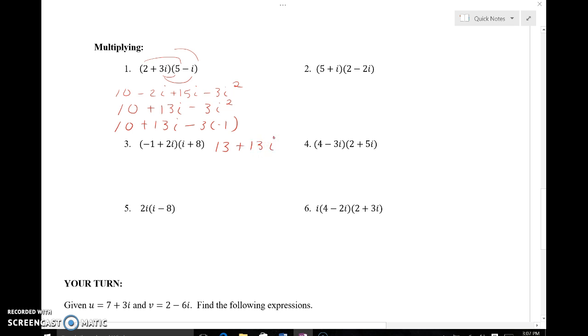So I just replaced i squared with negative 1. I showed you earlier how to get that and now I'll just simplify. Negative 3 times negative 1 is positive 3 so 10 and positive 3 ends up being 13 and then I just keep the complex portion, 13i. So this would be my simplest form of my complex number.